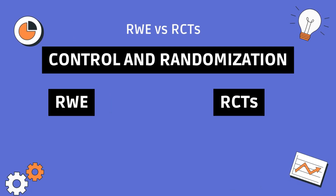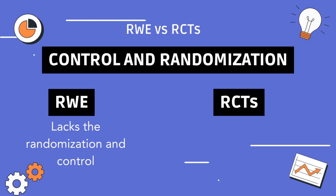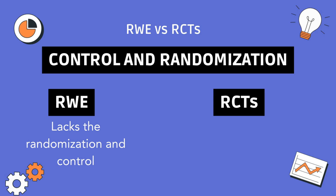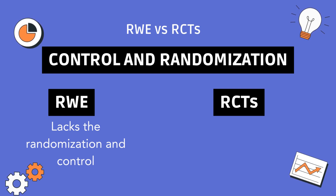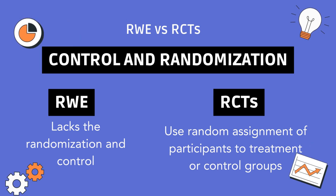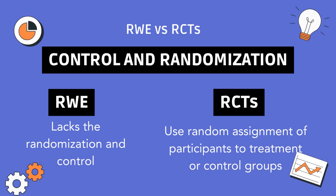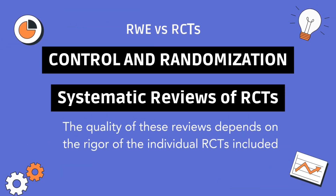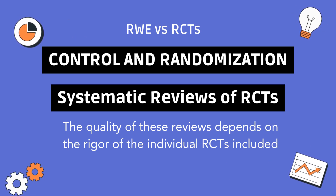Control and randomization: RWE lacks the randomization and control inherent in RCTs, which can introduce bias and confounding factors. However, advanced statistical methods such as propensity score matching and regression analyses are used to mitigate these biases and adjust for confounders. RCTs use random assignment of participants to treatment or control groups, which helps eliminate selection bias and allows for a clearer assessment of causal relationships between interventions and outcomes. Systematic reviews of RCTs: the quality of these reviews depends on the rigor of the individual RCTs included. The aggregated results provide a high level of evidence, but are still constrained by the methodological limitations of the original studies.